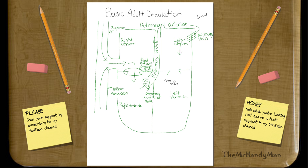We are now in the left atrium, and once again gravity is going to cause the blood to fall through this valve, which is called the bicuspid, or the mitral valve — also known as the left AV valve. Any teacher will recognize any of those three names as valid on a test. So the blood has come through the bicuspid, mitral, or left AV valve — whichever one you want to call it.